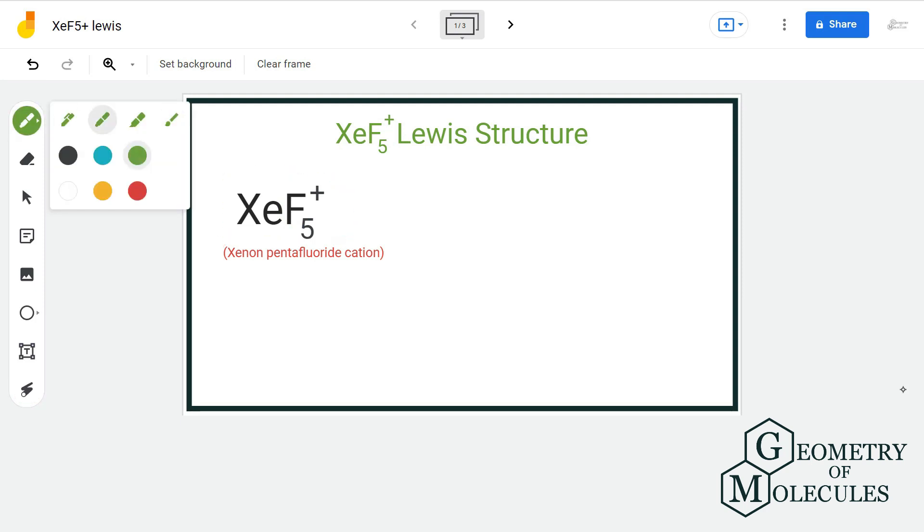To determine its Lewis structure, let us count the total number of valence electrons. We have 1 xenon atom having 8 valence electrons,